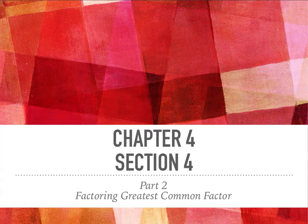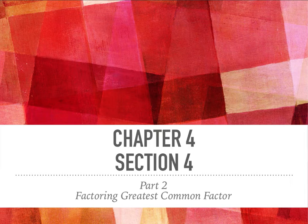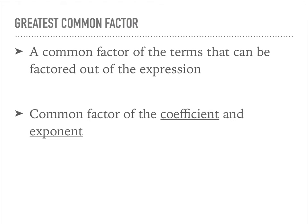Alright, so 4.4 part 2. We are continuing with the same thing we did yesterday — we are factoring, but now all of our terms are going to have a greatest common factor that we need to take out first before we factor. So a common factor of the terms that can be factored out of the expression is our greatest common factor. That could either be a number or a variable like x. So the common factor of the coefficient and the exponent — the coefficient would be the number, x is our variable.